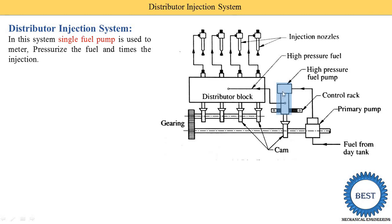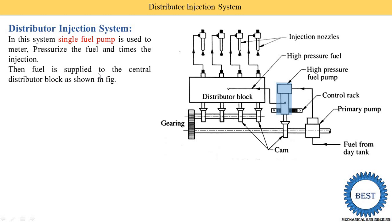The blue color component shown here is the high pressure fuel pump. Fuel enters from the day tank, first going into the primary pump, and after that it is supplied to the high pressure fuel pump. In the high pressure fuel pump, the pressure of the diesel is increased, and then it is supplied to the distributor block. Fuel is then supplied to the central distributor block as shown in this figure.